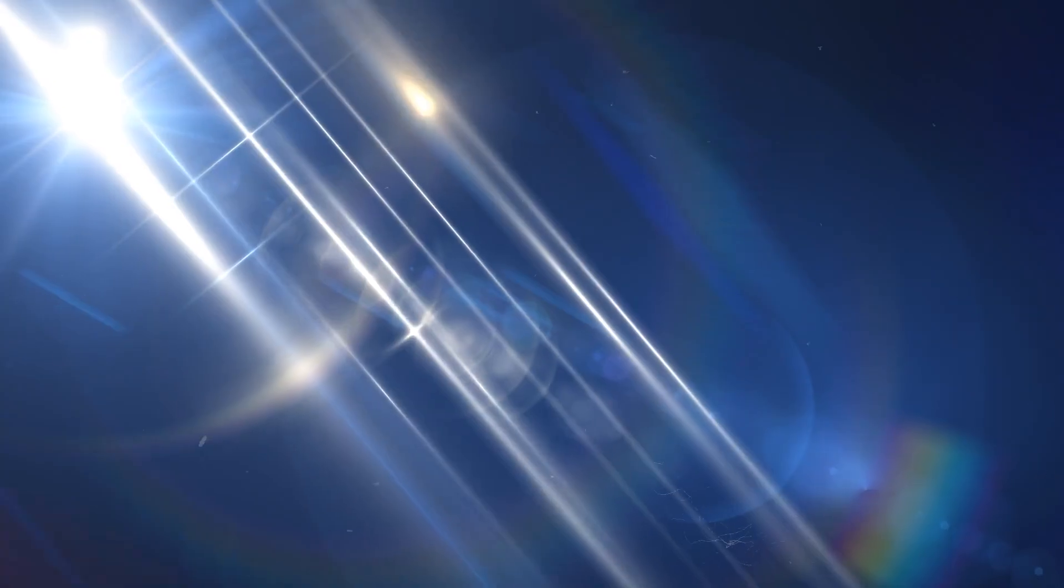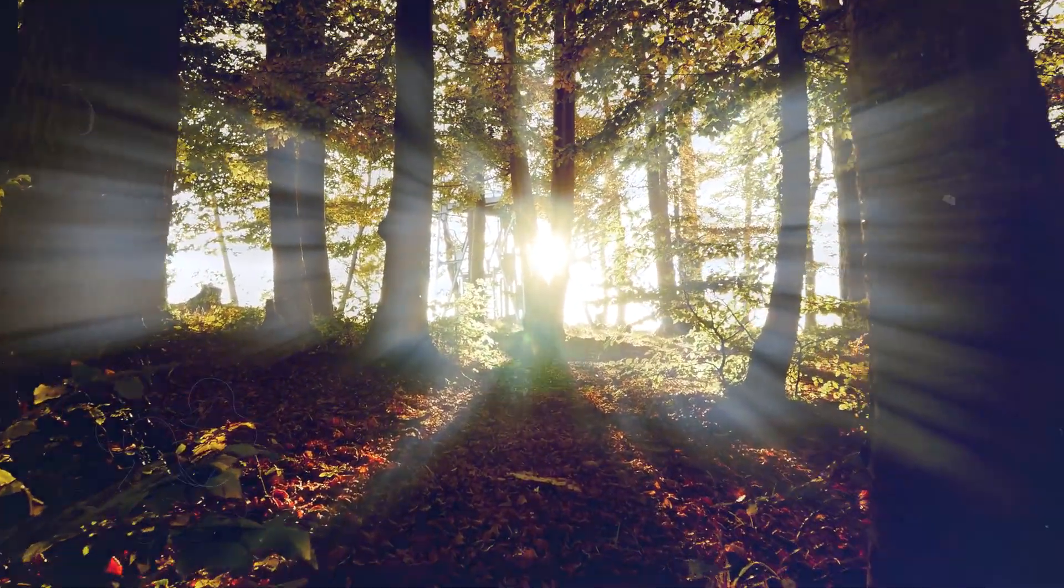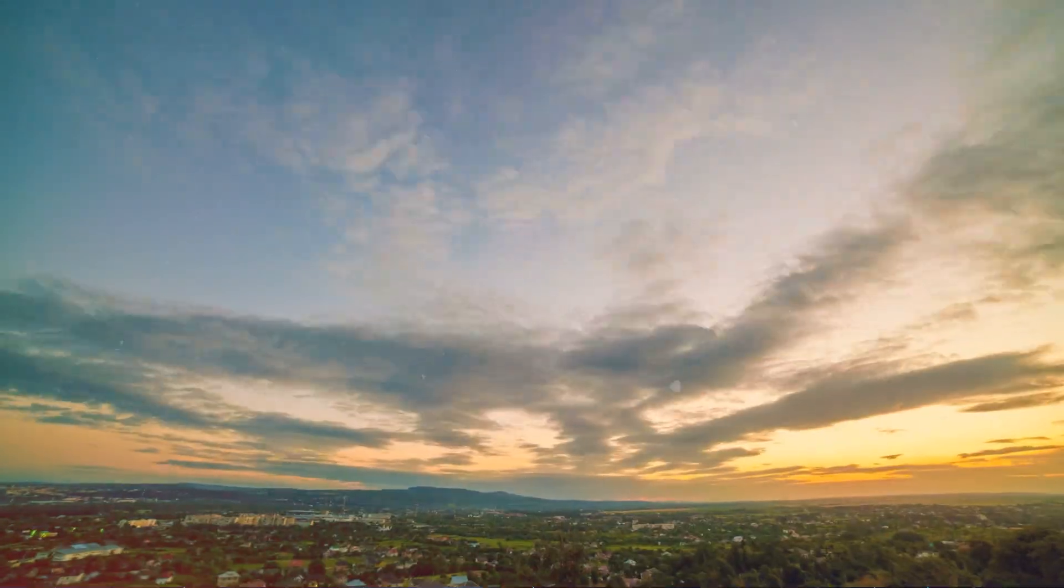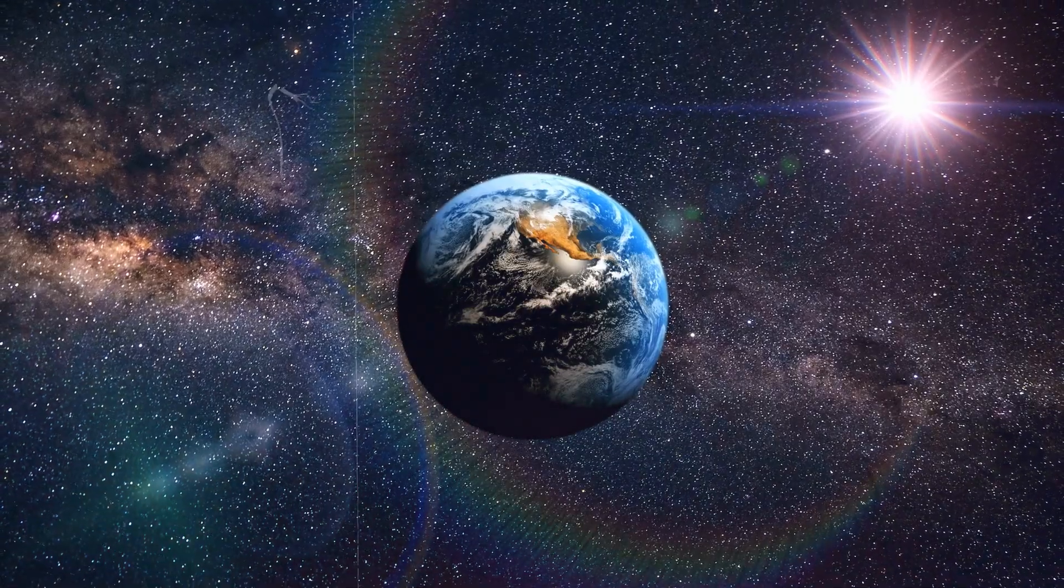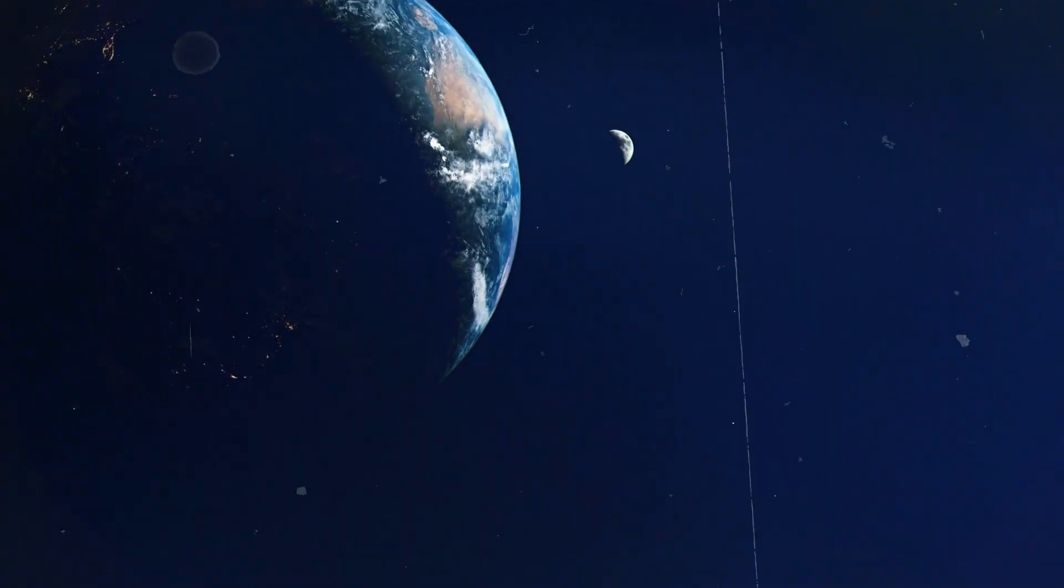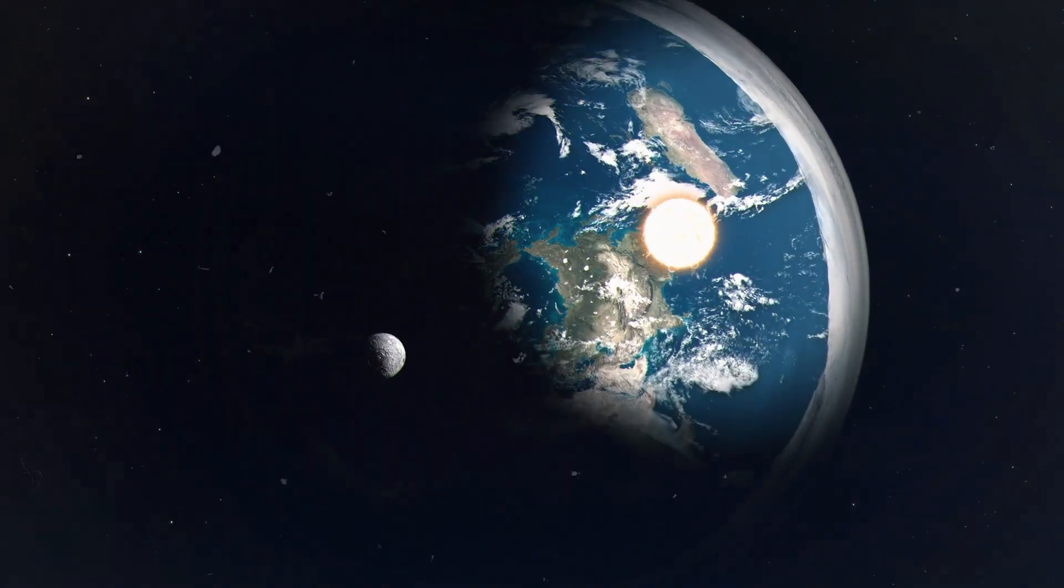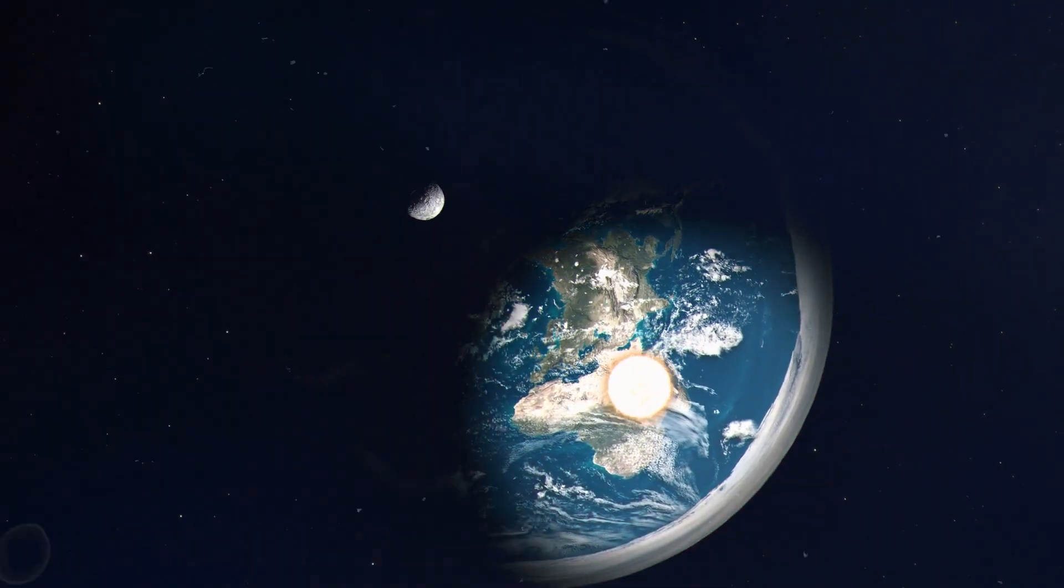Finally, let's address the seventh myth. We can know what the universe is now. Light, the fastest traveler in the cosmos, takes time to reach us from distant celestial objects. Therefore, when we observe a star or galaxy millions or billions of light-years away, we are seeing it not as it appears now, but as it appeared when the light began its journey toward Earth. This cosmic delay means our view of the universe is always a snapshot of its past, revealing its history rather than its current state.